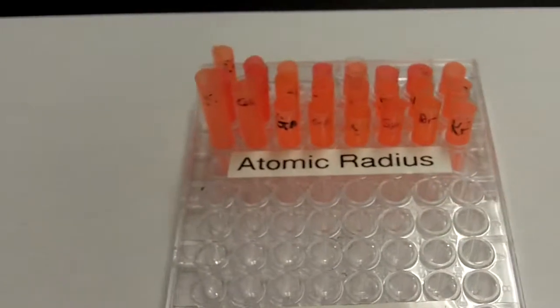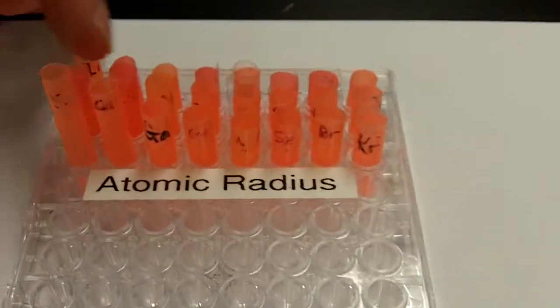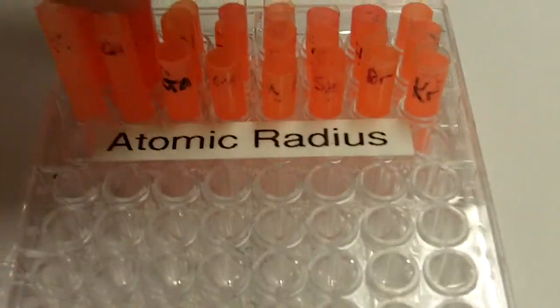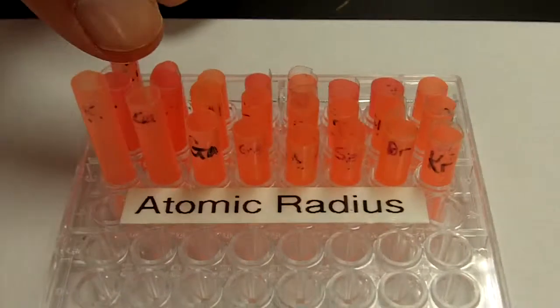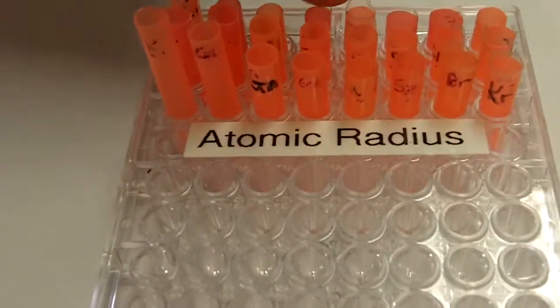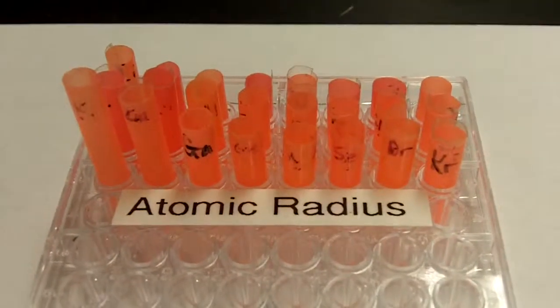So there's lots and lots of empty room. So what you see here pretty clearly is that as you move from left to right across a period, there's a definite decrease in the atomic radius. So all these here have one valence electron, and then 2, 3, 4, 5, 6, 7, and all the way over to 8. And you can see that it definitely decreases.